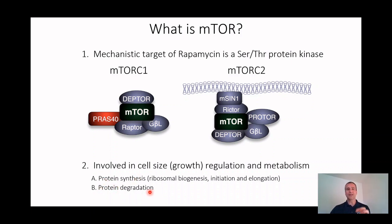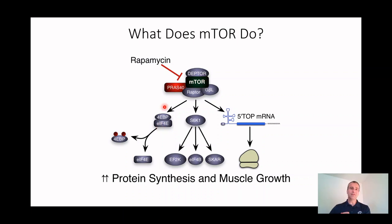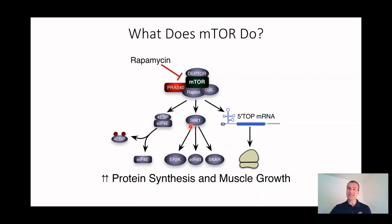mTOR regulates protein synthesis and degradation as well as metabolism. Looking at the pathway diagram: mTOR complex 1 phosphorylates 4EBP — that cap-binding protein that normally blocks 4E from binding 4G and starting translation. When 4EBP is phosphorylated it releases 4E, initiating translation. mTOR complex 1 also phosphorylates S6 kinase 1, which serves as a marker of mTOR activity and drives a number of processes that increase elongation and initiation.